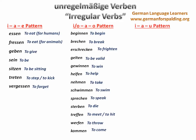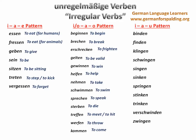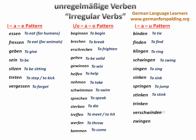Our final group are verbs changing to an I in the third person singular, staying an I in many cases, changing to an A in the third person singular past, and then a U in the past participle. These are: binden, to tie; finden, to find; klingen, to ring; schwingen, to swing; singen, to sing; sinken, to sink; springen, to jump; stinken, to stink; trinken, to drink; verschwinden, to disappear; and zwingen, to force.